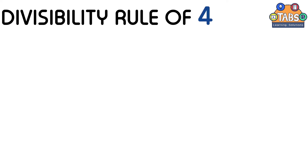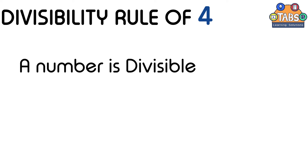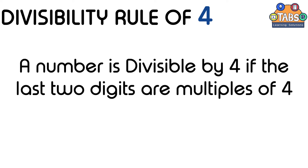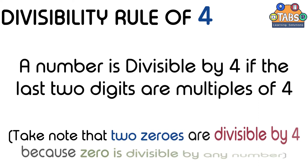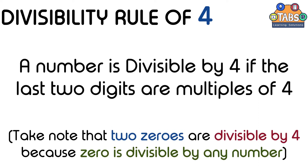Now let us start with the divisibility rule of 4. A number is divisible by 4 if the last two digits are multiples of 4. Please take note that two zeros are divisible by 4 because 0 is divisible by any number.